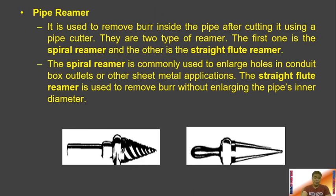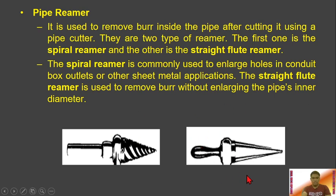Then we have the pipe reamer. After cutting a pipe with a pipe cutter, we use a reamer to remove the burr inside the pipe so that the wire insulation will not be stripped. There are two types: the spiral reamer, commonly used to enlarge holes in conduit boxes or in sheet metal applications, and the straight float reamer, used to remove burrs without enlarging the pipe's inner diameter.